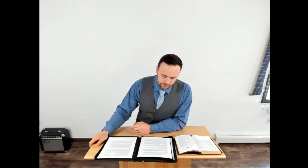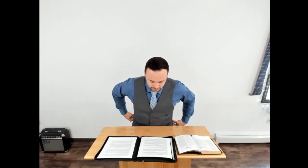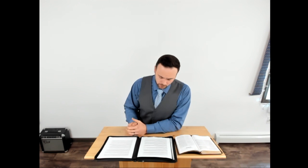Verse 9: Let the brother of low degree rejoice in that he is exalted, but the rich in that he is made low. Because as the flower of the grass he shall pass away, for the sun is no sooner arisen with a burning heat, but it withereth the grass, and the flower thereof falleth, and the grace of the fashion of it perisheth, so also shall the rich man fade away in his ways. Blessed is the man that endureth temptation, for when he is tried he shall receive the crown of life, which the Lord promised them to love him. Let no man say when he is tempted, I am tempted of God, for God cannot be tempted of evil, neither tempteth he any man. But every man is tempted when he is drawn away of his own lust and enticed. Then when lust hath conceived, it bringeth forth sin, and sin, when it is finished, it bringeth forth death.